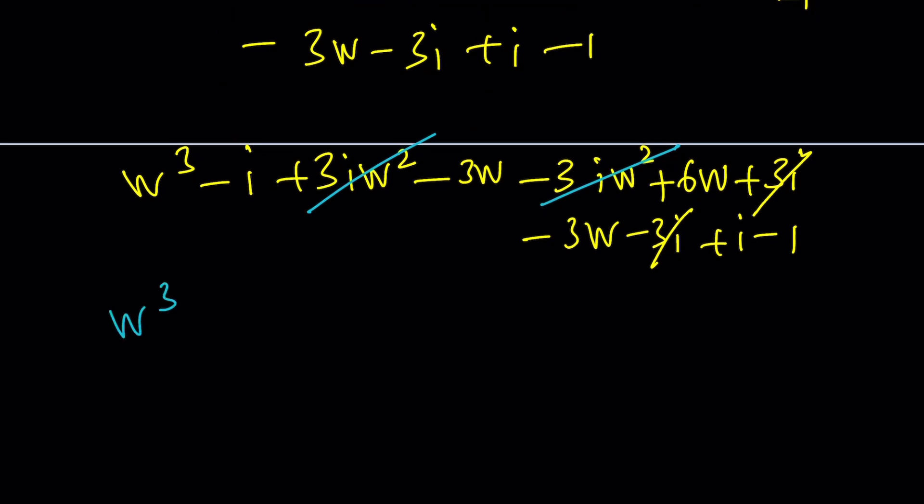And now let's see what we have left. W cubed. And then we have a 6W minus 6W. Everything cancels out, seems like. And then I and I will also cancel out. Isn't that beautiful? And you're going to end up with W cubed minus 1 equals 0. Isn't that awesome? So W cubed is going to be 1.